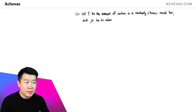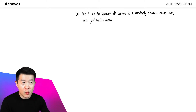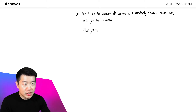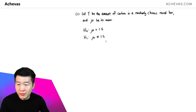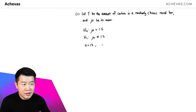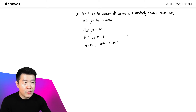In part one, we let Y be the amount of carbon in a randomly chosen round bar and μ be the mean of Y. We are doing a hypothesis test checking whether the mean is 1.5%, with the alternative hypothesis that it is not equal to 1.5%. The number of samples is 15, and the population variance is equal to 0.09 squared.